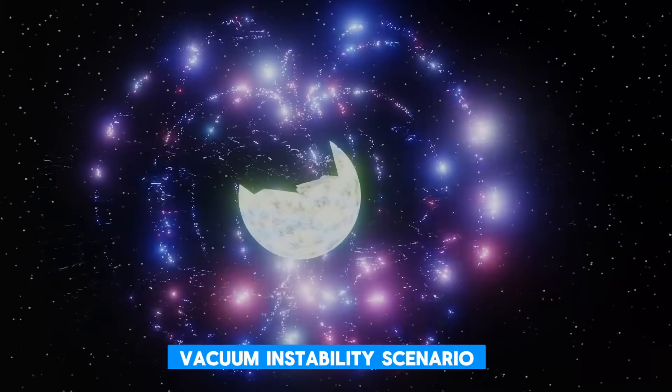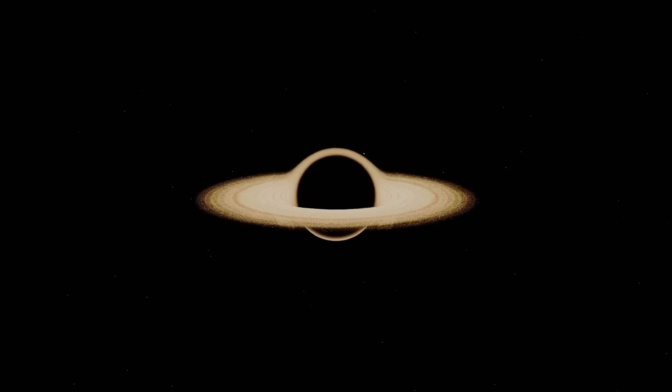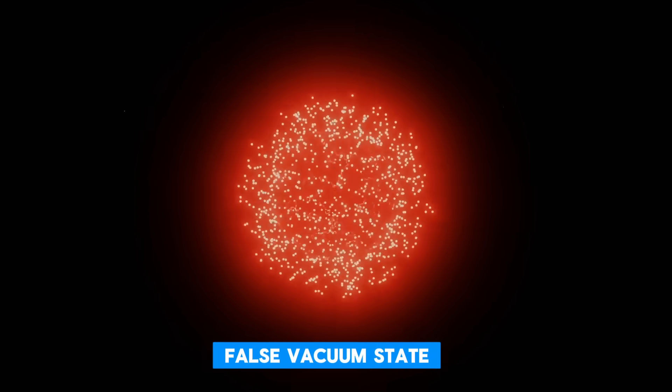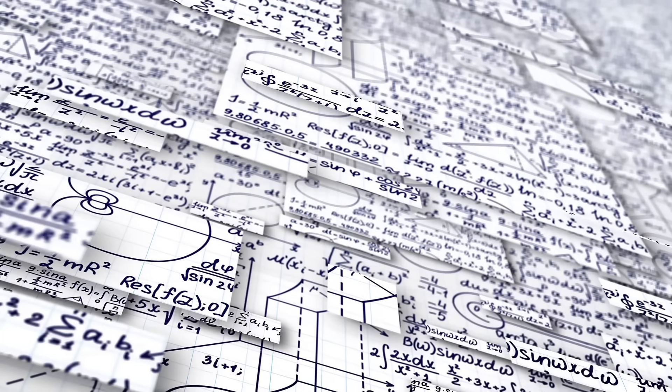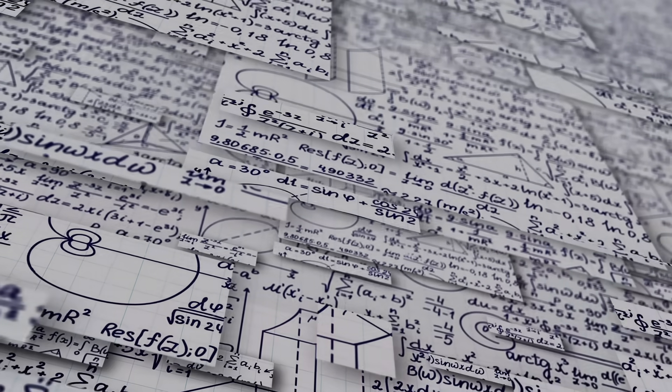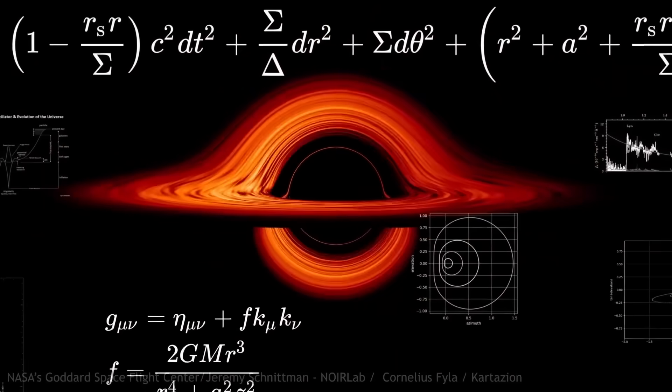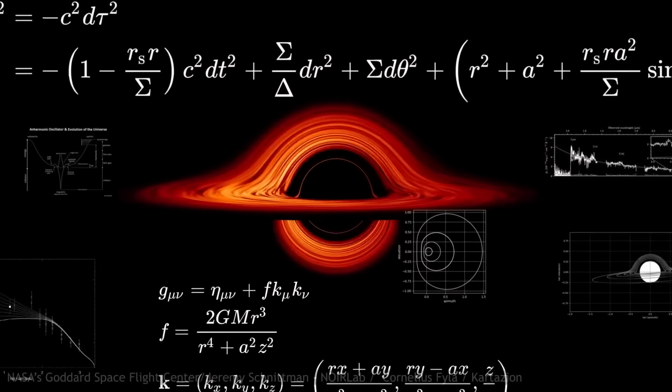Consider the vacuum instability scenario. A legitimate concern where our universe might exist in what physicists call a false vacuum state. This spike pattern shares disturbing similarities with those mathematical models.